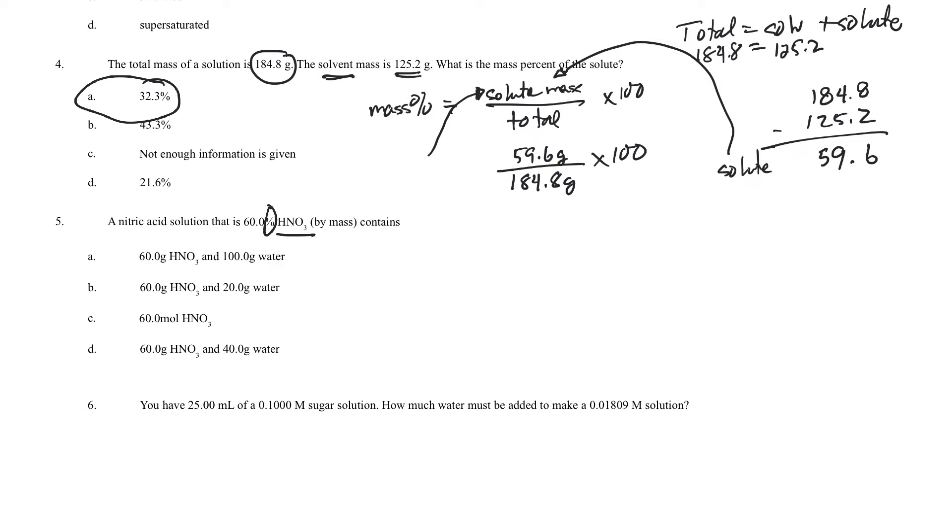So for 60% nitric acid, I know there's going to be 60 grams of solute and then 40 grams of solvent, which in most cases is water. So that'll make up 100 grams total solution. All right, and then number 13.